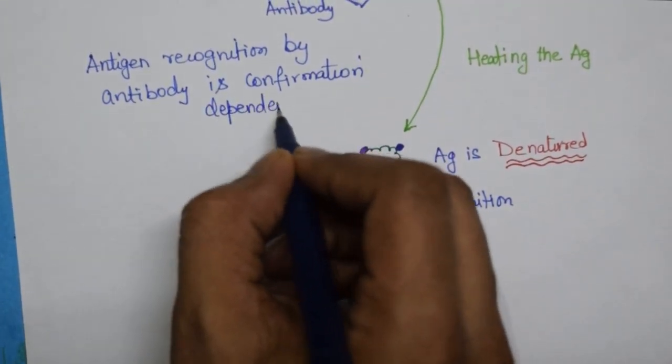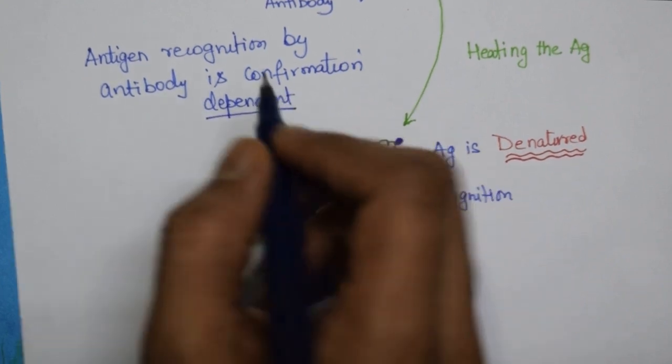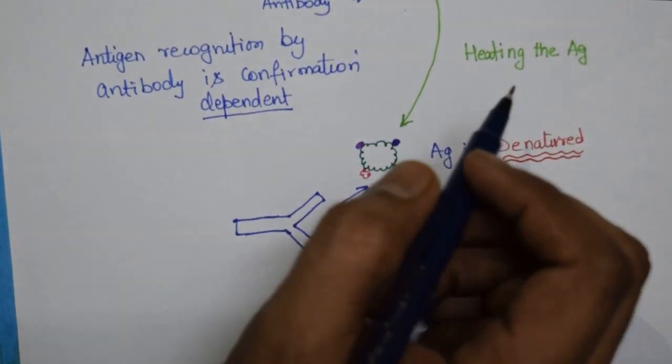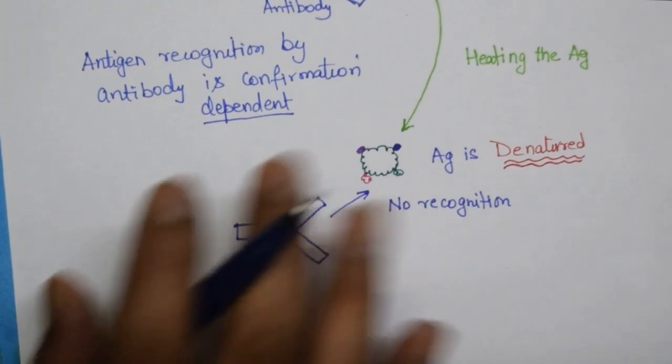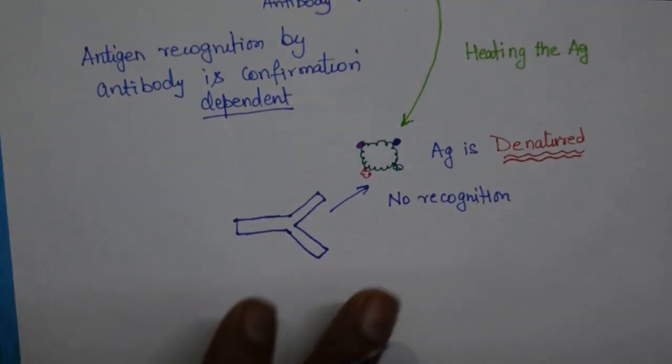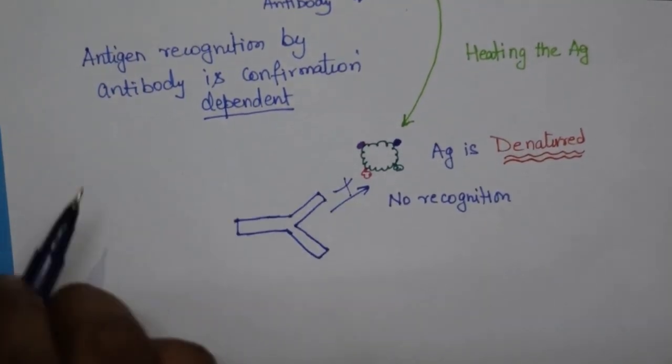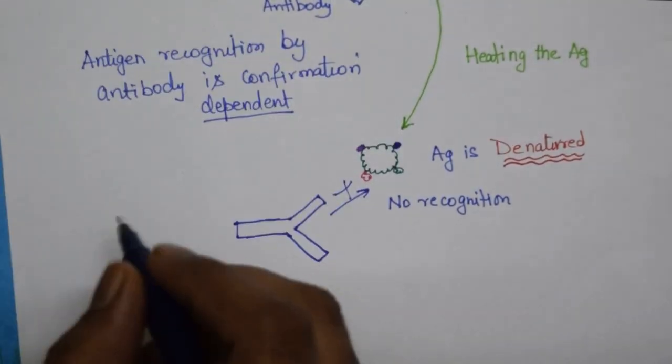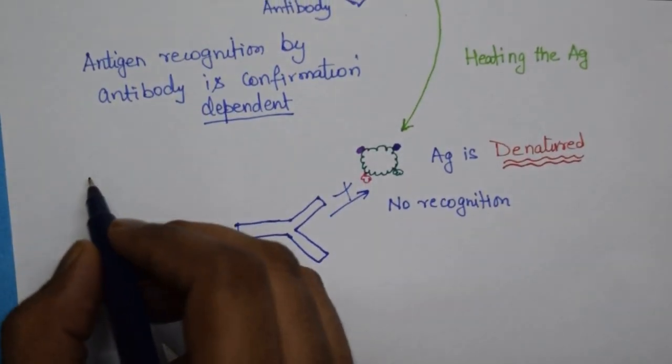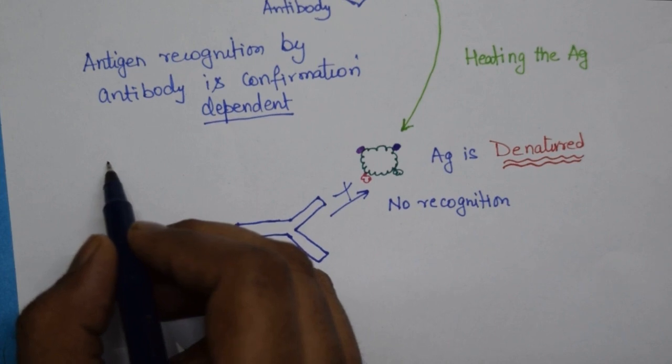That means the moment we heat denature an antigen there is no recognition. As you can see here there is no recognition. So this recognition basically subsides and this is probably one reason why we do not heat denature the vaccines.